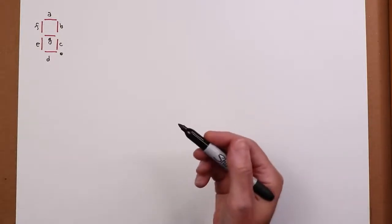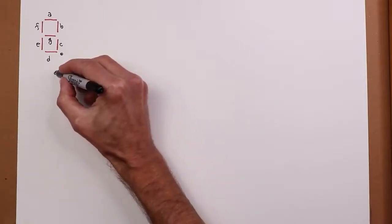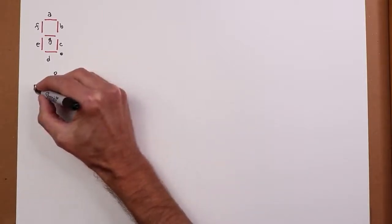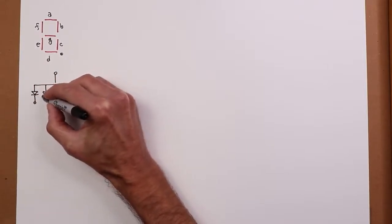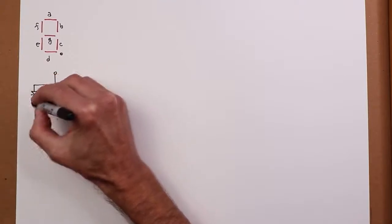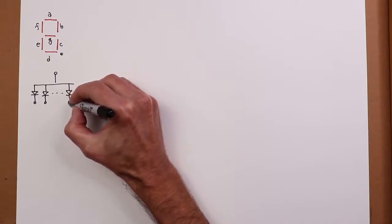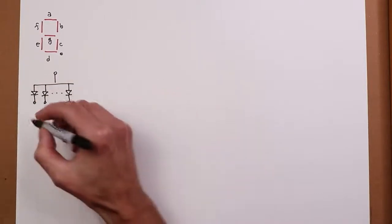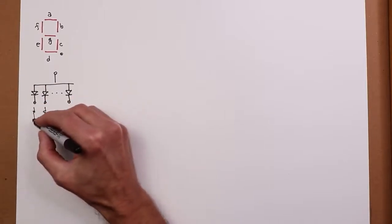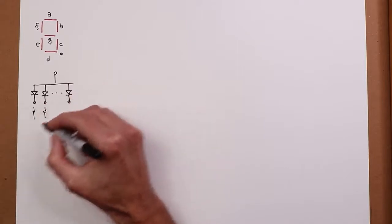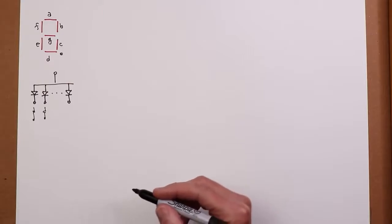Now, these are available in either common anode or common cathode configurations. So a common anode looks like this. You have a bunch of LEDs sort of in a sequence like this. The anodes are common for all of them. So what you would normally do is connect up little current limiting resistors to these things.